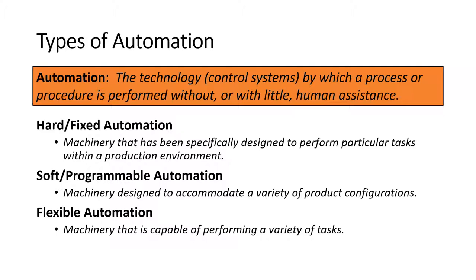We can break automation down into three main categories: hard or fixed automation, soft or programmable automation, and flexible automation.